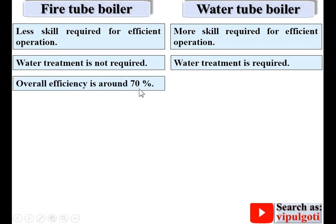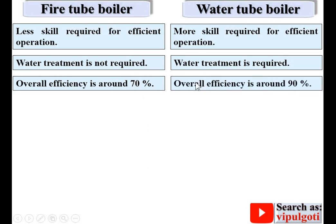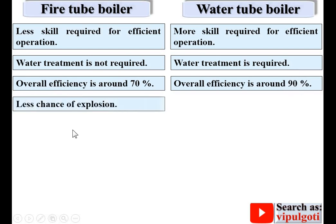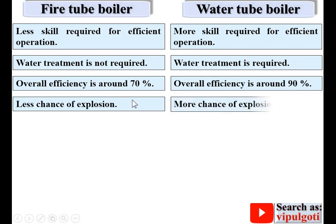Overall efficiency is around 70% in case of a fire tube boiler, whereas in case of a water tube boiler efficiency is up to 90%, which is why it is generally suitable for large power plants. There is less chance of explosion in fire tube boilers because pressure is up to 25 bar, whereas there are more chances of explosion in water tube boilers because pressure is up to 125 bar.